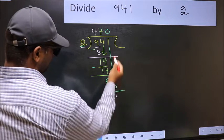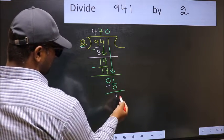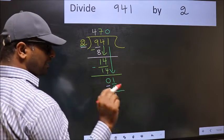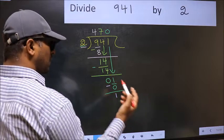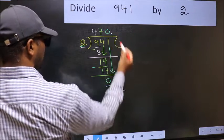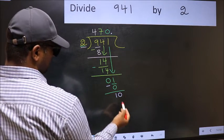Over here, we did not bring any number down. And now 1 is smaller than 2. So now you can put a dot and take 0. So 10.